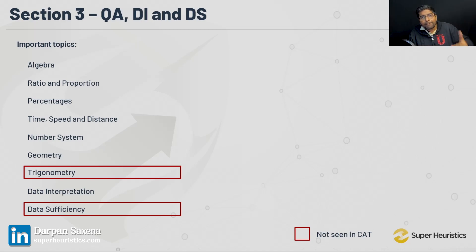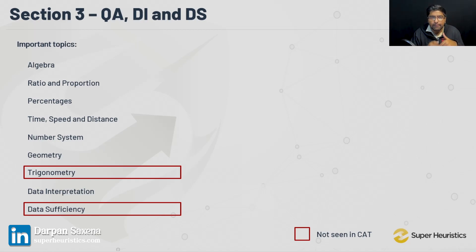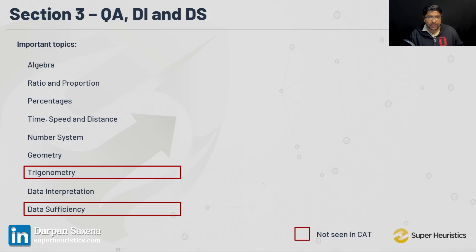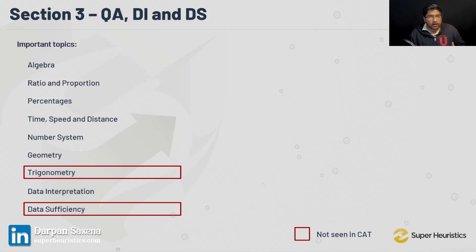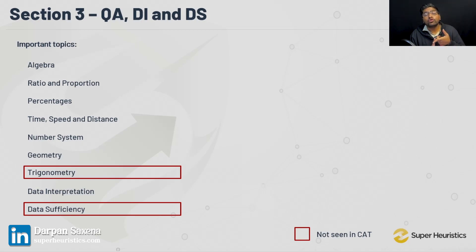One reason why a lot of students appear for SNAP more than once is that across the slots, the weightages of these topics change. For example, in the last year, one slot had a very high percentage of number system questions, whereas the other two slots had more questions from algebra and arithmetic. Which means that if you hadn't studied well for number systems and you were in that slot, you were at a disadvantage. So do not take any of these topics lightly — all of them are important because you don't know what combination of questions will appear in your slot.